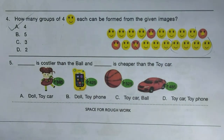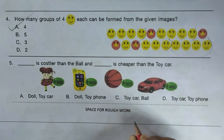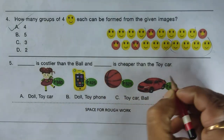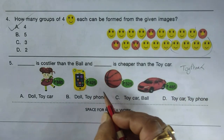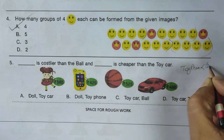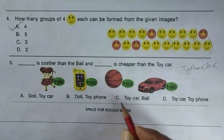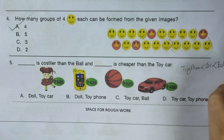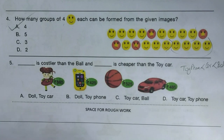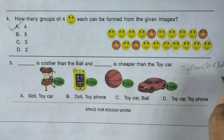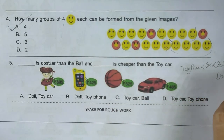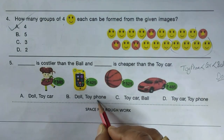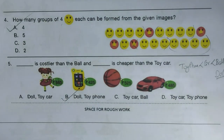Next question: arrange the items by cost. Starting from cheapest: toy phone, then toy car, then ball, and the costliest is the doll. Costlier than ball is doll, and cheaper than toy car is toy phone. So doll and toy phone are the answers — option B is correct.